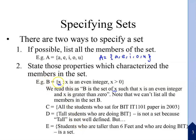B is the set of x such that x is an even integer and x is greater than 0. So if you want to write B as the set of even integers greater than 0, that gives us 2, 4, 6, ... Note that we can't list all the members in set B, so we write B = {2, 4, 6, ...} with an ellipsis indicating it is infinite.